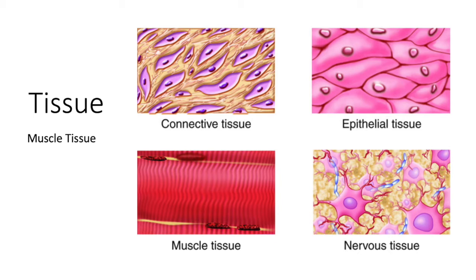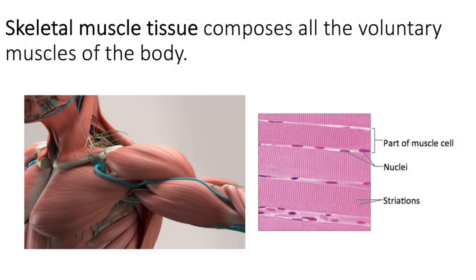All of the muscle tissues share some things in common but also have differences. Skeletal muscle tissue is found in all of the voluntary muscles of the body — the gluteus maximus, biceps brachii, masseter, gastrocnemius, latissimus dorsi, trapezius. You will learn all of these muscles when we do the muscular system. All of these muscles are voluntary; you can consciously decide to contract them, and there is even a place in your brain where that initiation begins.